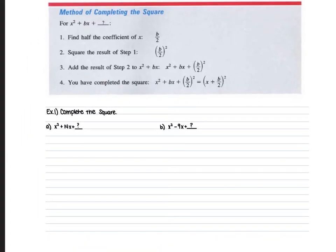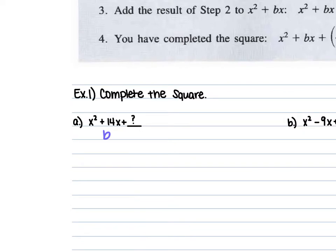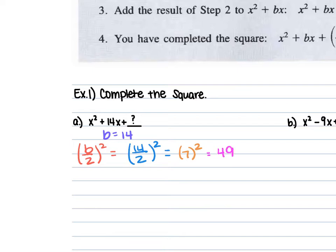Looking at the first set of examples, we're asked to complete the square — just finding the c term to make this a perfect square trinomial. For example a, we have x squared plus 14x plus something. We need to find that something. We take b, which is 14, divide it by 2 and square it: 14 over 2 squared. 14 over 2 is 7, and 7 squared is 49. So 49 is what goes in for that c term.